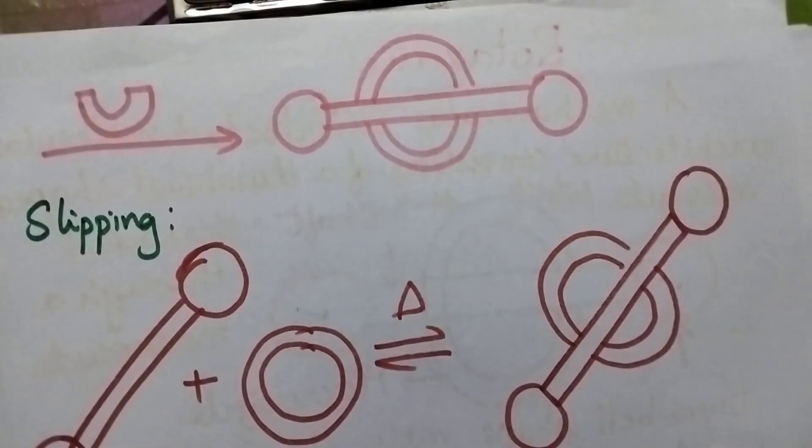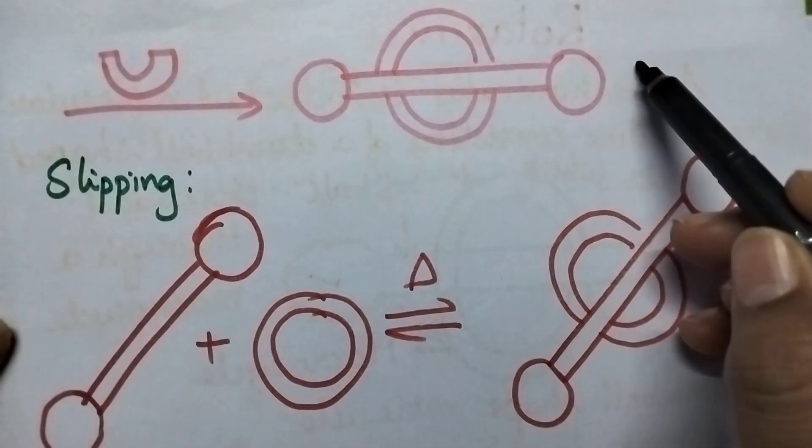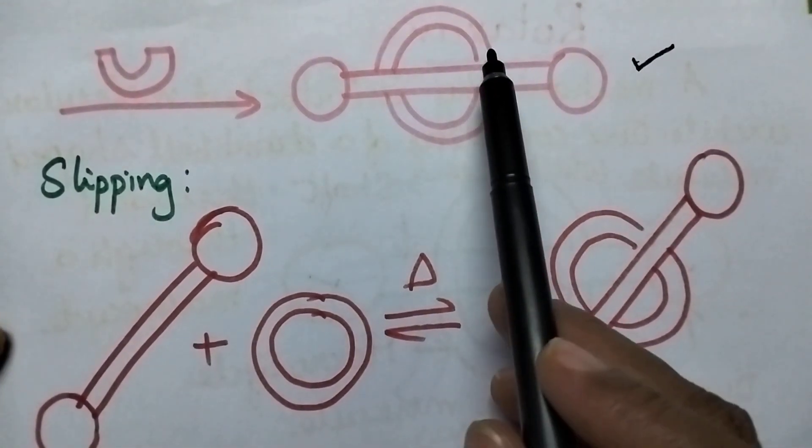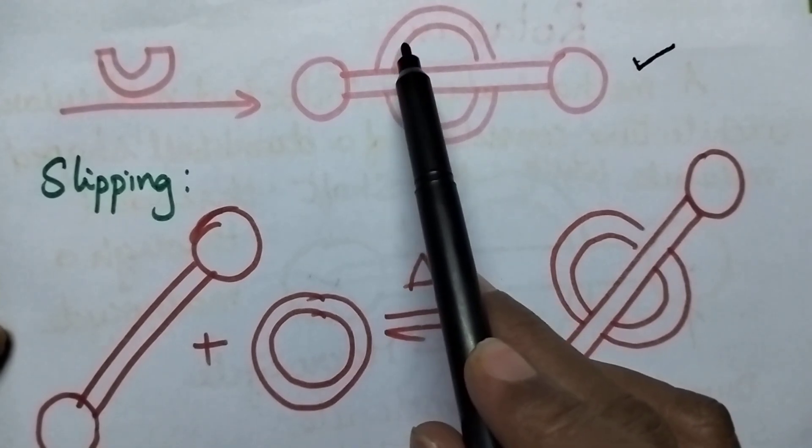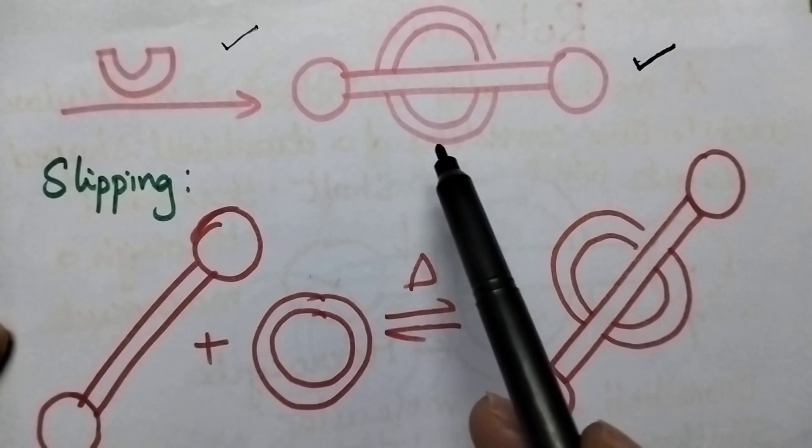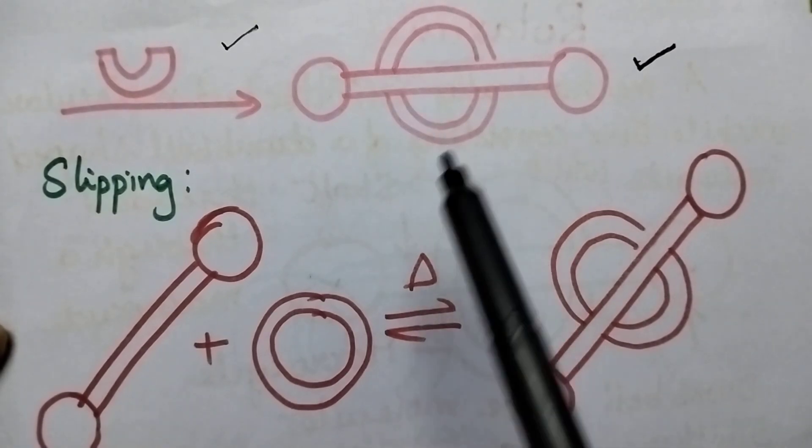Then it results in the formation of the rotaxane. So in the first step, the partially filled macrocycle is inserted, and in the second step, the cyclization takes place, and hence it is called the clipping process.